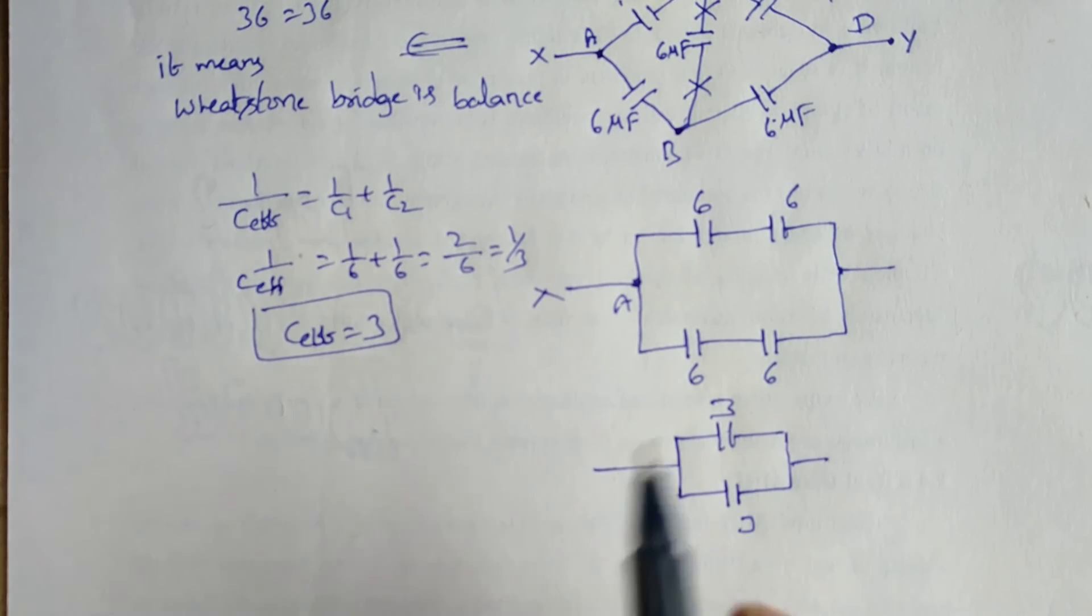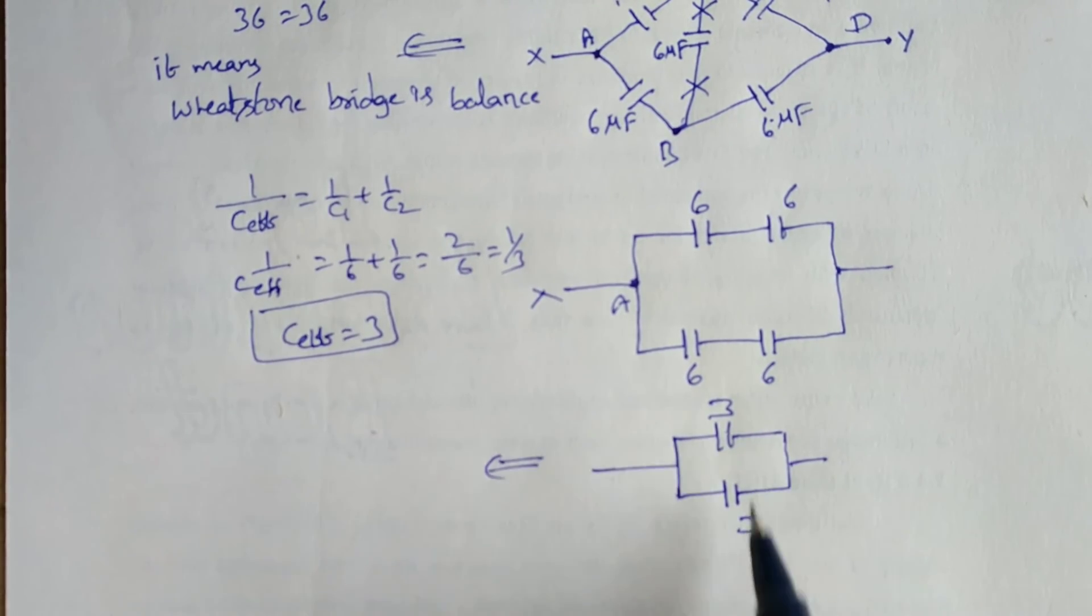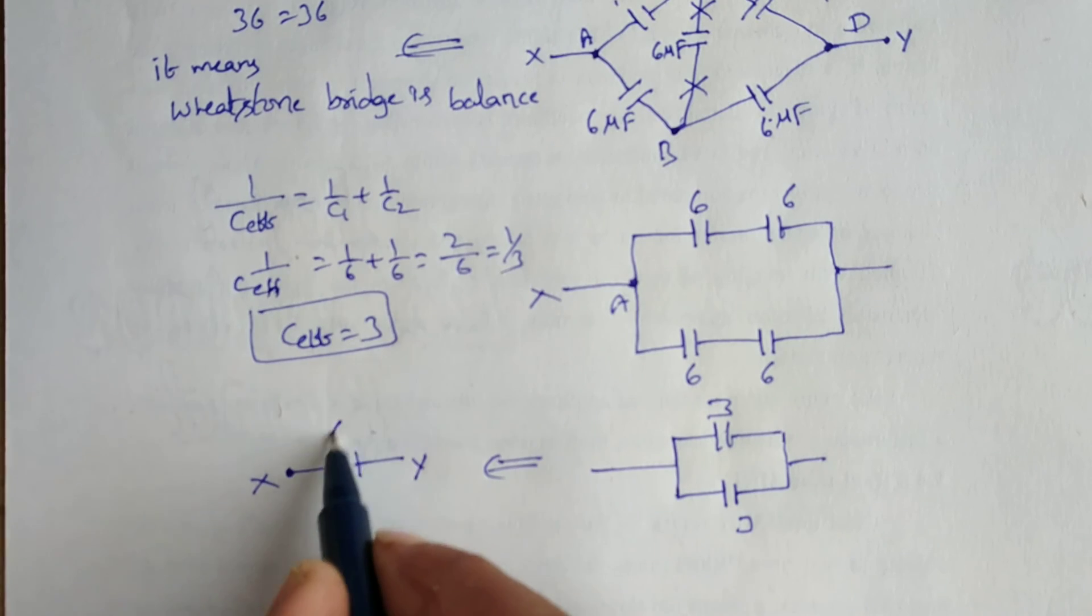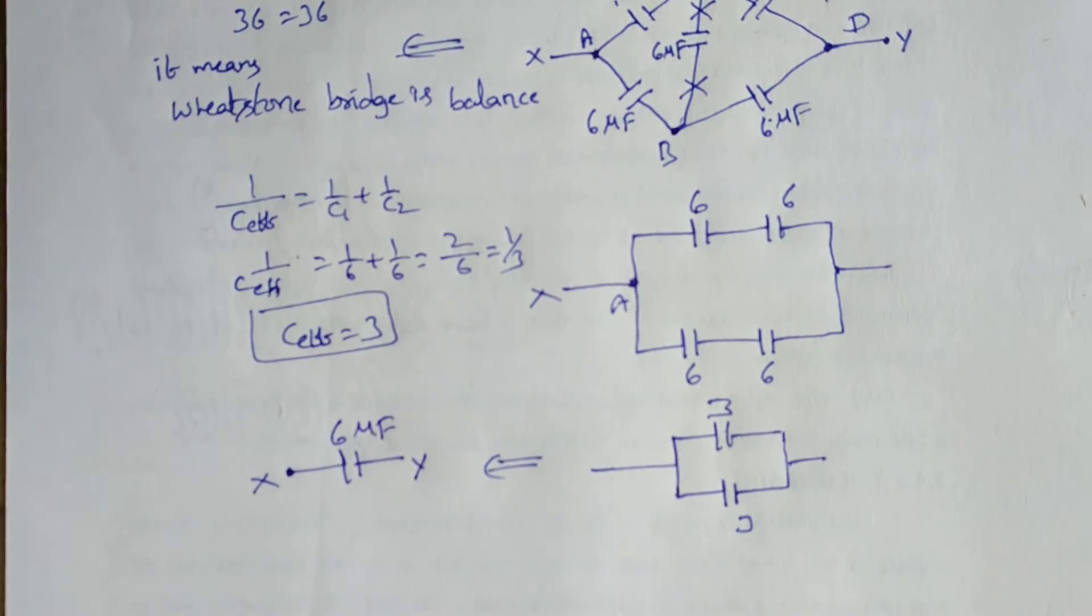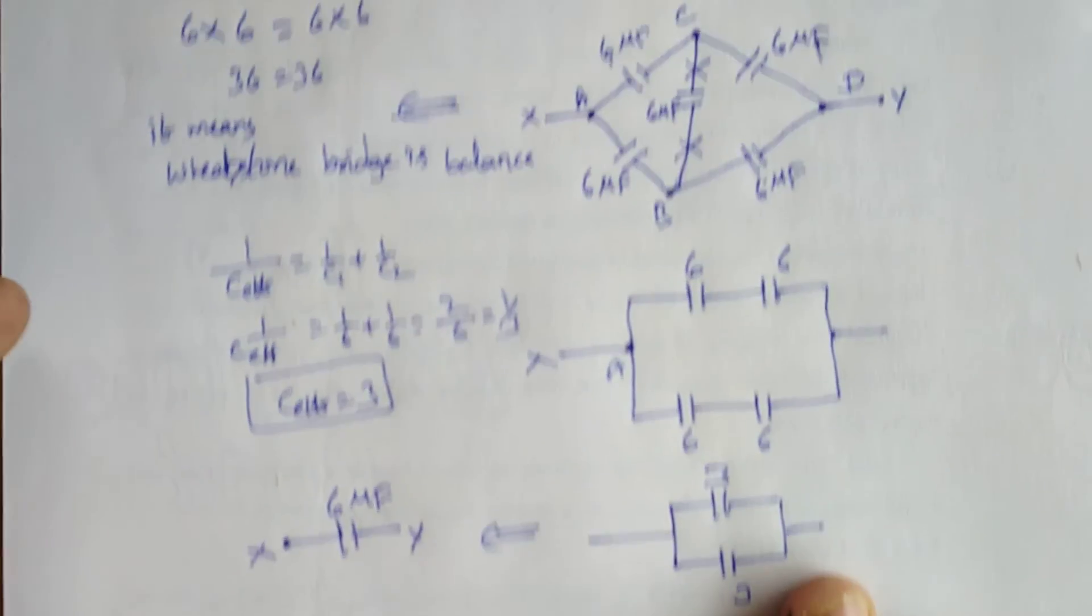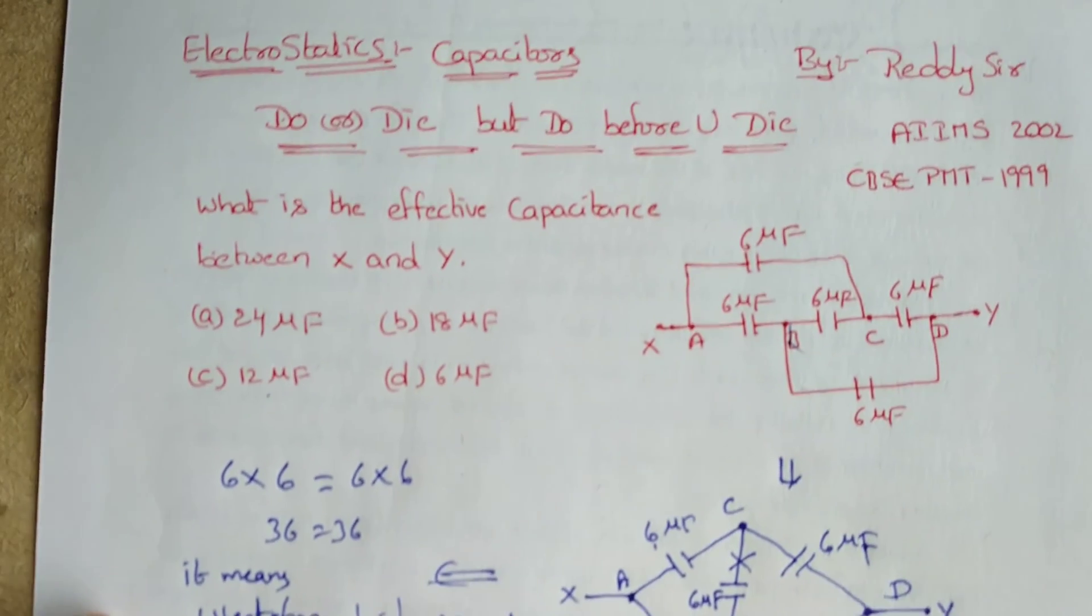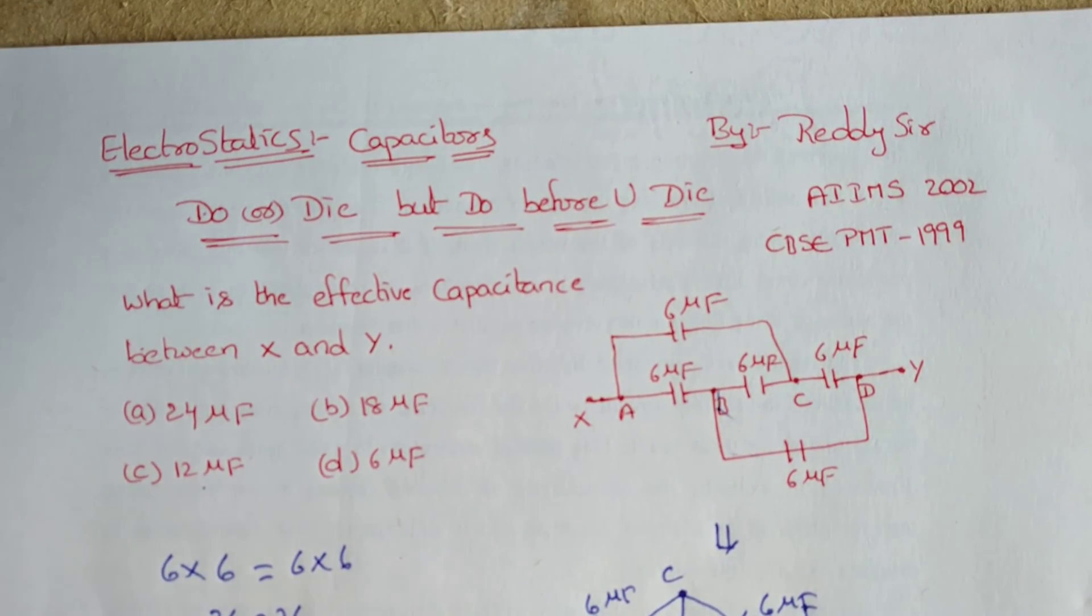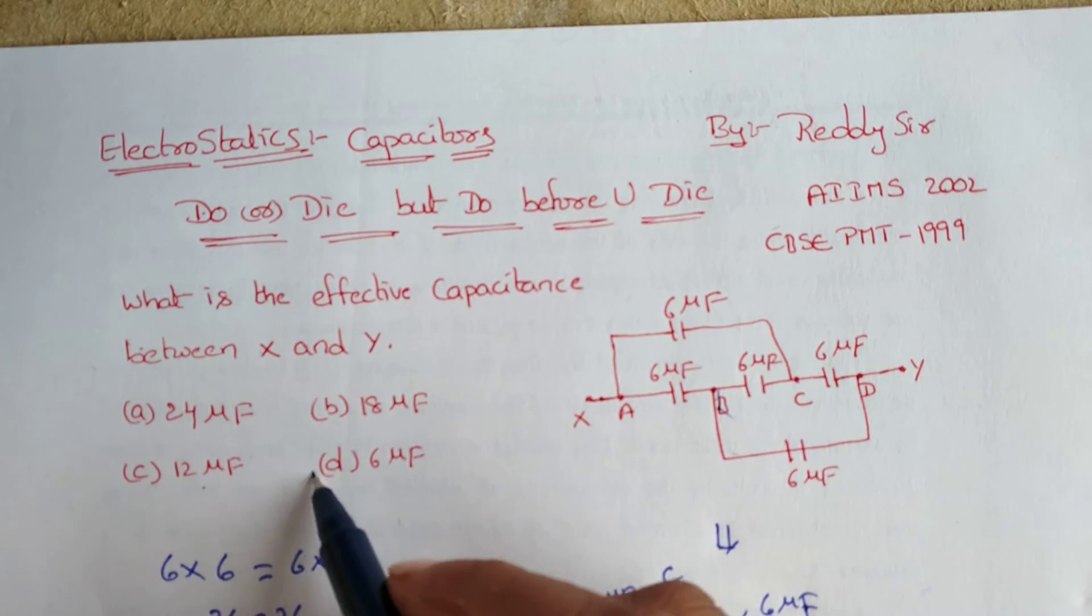Again I'm rearranging. This is 3 and this is also 3. Now if the two capacitors are in parallel, we just have to add 3 plus 3, which is 6. This is X and this is Y. What is the effective capacitance? 6 microfarad. Which option is correct? Option D is correct.